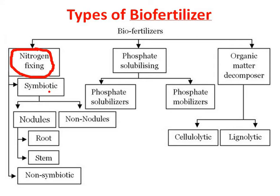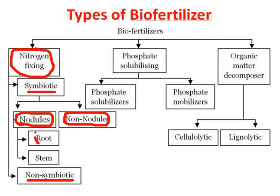In nitrogen fixing, we have two categories: symbiotic and non-symbiotic. Within symbiotic, there are nodule-making and non-nodule-making types. Even within nodule formation, some make nodules in the root and some in the stem. Different categories of microbes do this, but they are all finally fixing nitrogen for plant growth promotion.